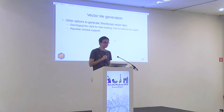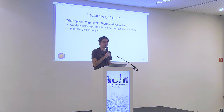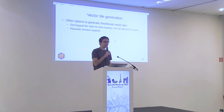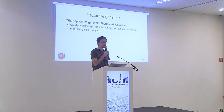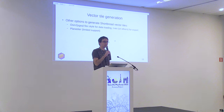Last question: how large is the disk space required to store the planet in the Shortbread schema? In MBTiles, it needs about 70 to 80 gigabytes. If you store them as individual files on an ext3 file system, you need about 1.2 terabytes. That covers zoom levels 0 to 14.